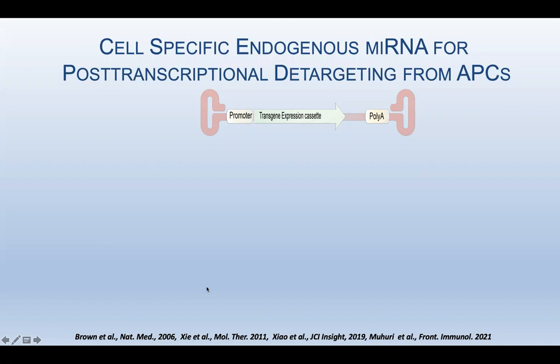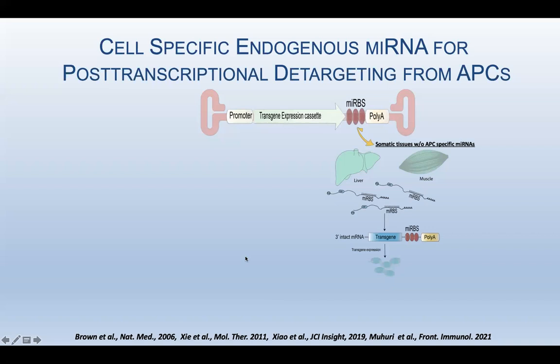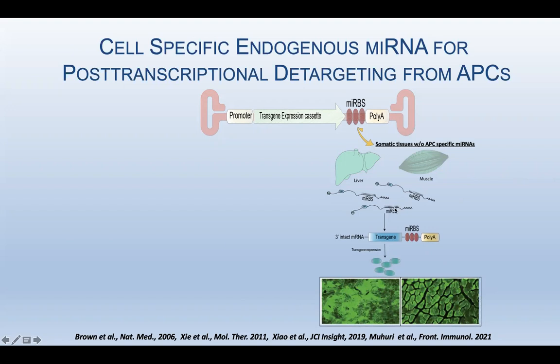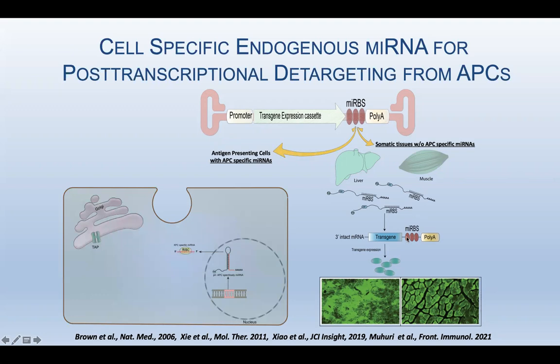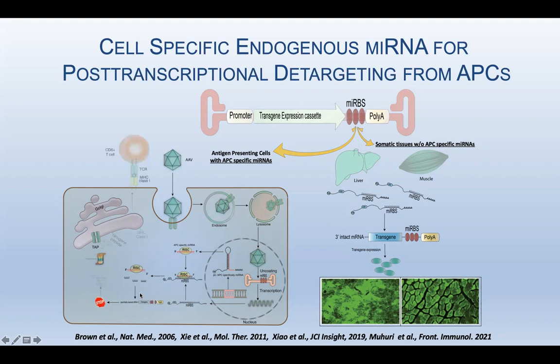The second strategy is to use cell-specific endogenous microRNAs for post-transcriptional detargeting from antigen-presenting cells. You incorporate a microRNA binding site that is specific to an APC-specific microRNA. When the AAV enters other tissues such as brain or muscle, where those APC-specific microRNAs are absent, you get robust expression. However, when this AAV transduces antigen-presenting cells, those cells have endogenous expression of this specific microRNA, which forms an RNA-induced silencing complex, and the transgene messenger RNA will be cleaved — resulting in reduced antigen presentation on the surface.